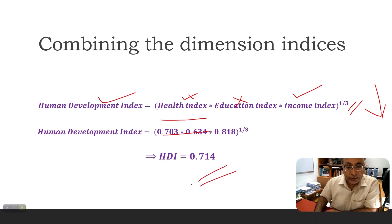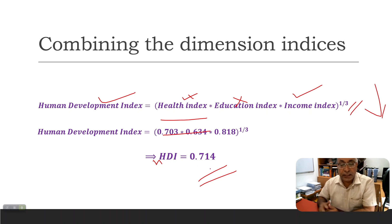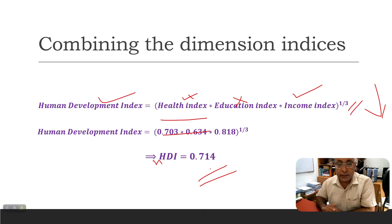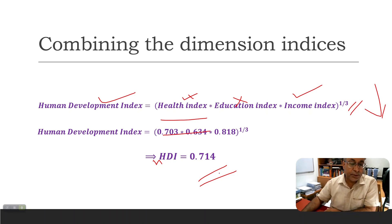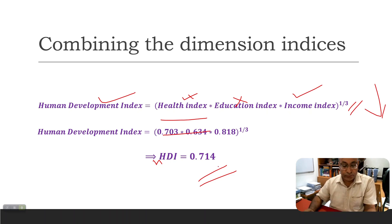The result is the new HDI for Guyana: 0.714. I hope the calculation is clear. If you have any queries, please ask in the comments and I will get back to you as soon as possible.